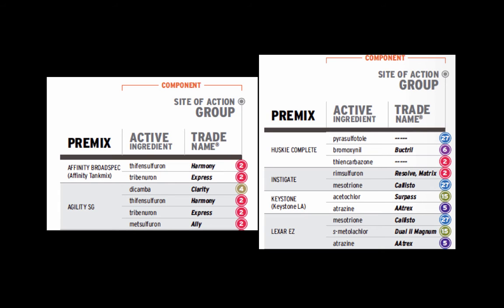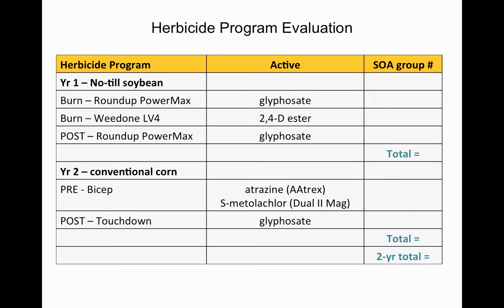In order to do this exercise, you need to use both sides of the chart. I'll walk through some different herbicide use patterns over a year of beans and a year of corn, showing how you'd determine your site of action count both within a year and over a year. Starting with a relatively simple program: Year 1 is no-till soybeans with a burndown of Roundup or glyphosate and 2,4-D, and then a post-emergence application of glyphosate as a follow-up.